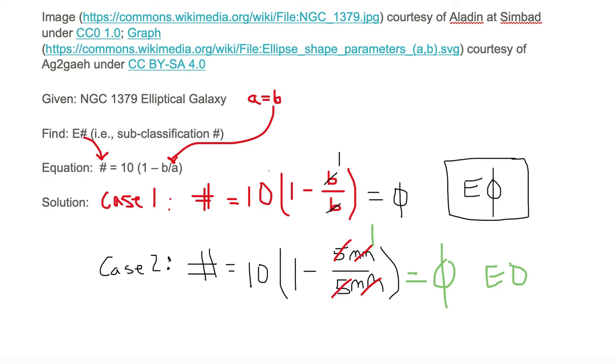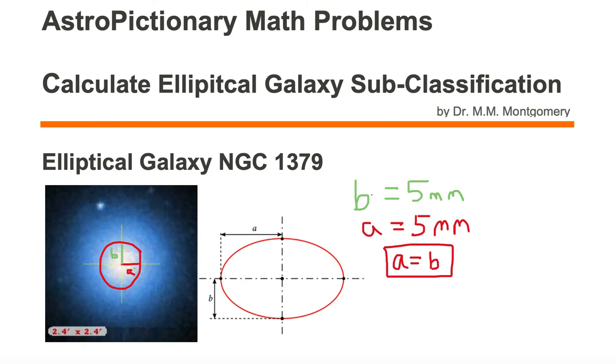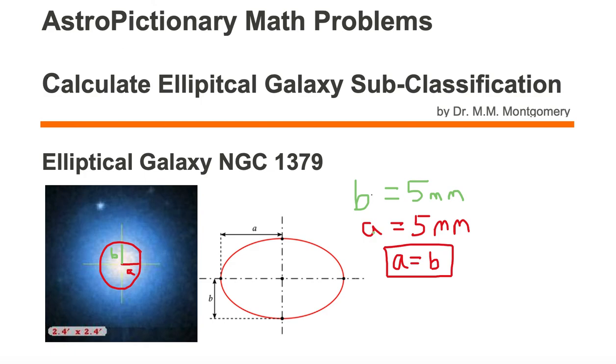So in review, what you need to do is if you don't already know the relationship between B and A, you need to draw the shape, draw in B, draw in A, and measure them with a ruler, get the number of millimeters for A and B, substitute them in for the equation for A and B, and then calculate it out. And you'll find the number, the subclassification number that's attached to the classification number E to define the galaxy classification, which in this case is E0 for NGC 1379. Thank you.